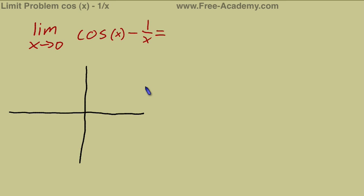The question submitted to www.free-academy.com in this video is what is the limit as x approaches 0 of cosine of x minus 1 over x? In a more complicated limit, sometimes what I will recommend is to actually graph the functions.